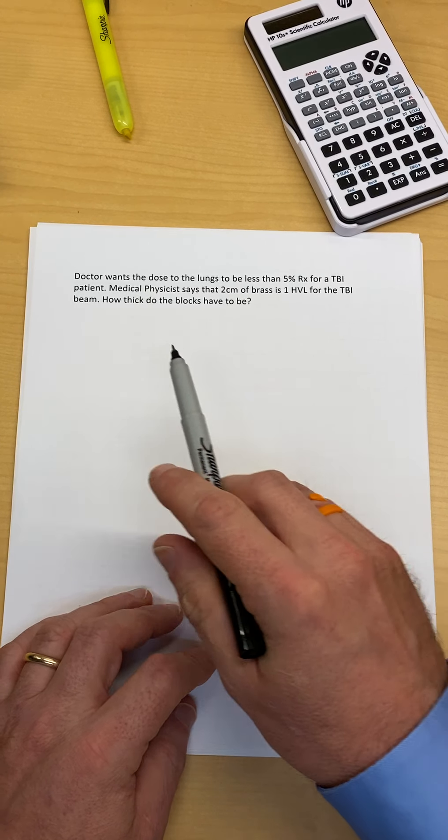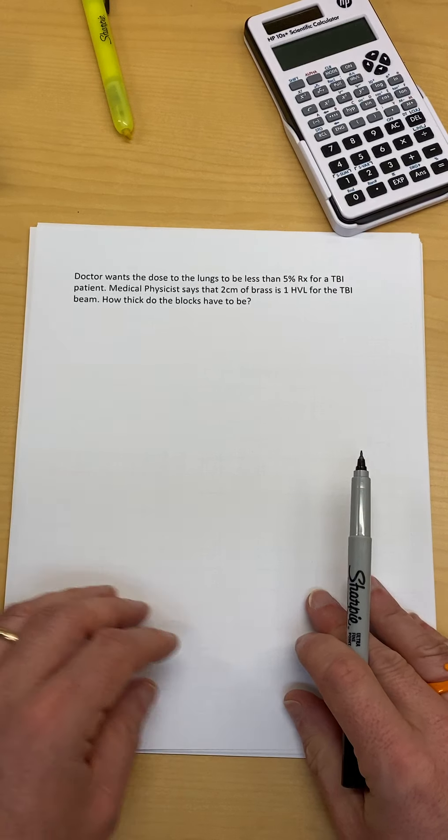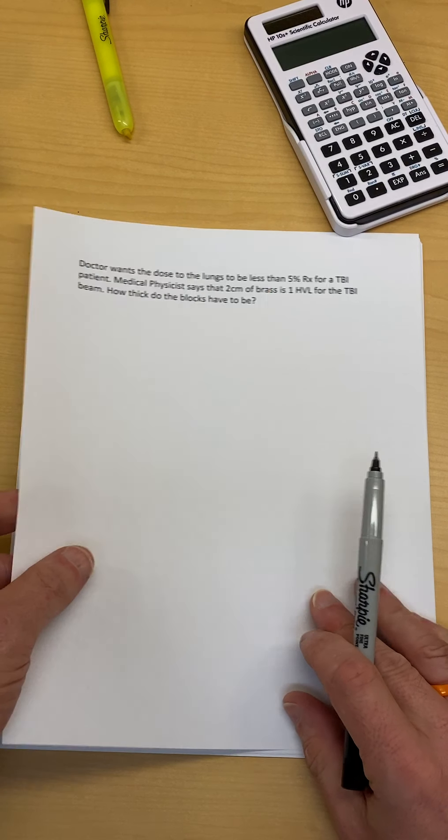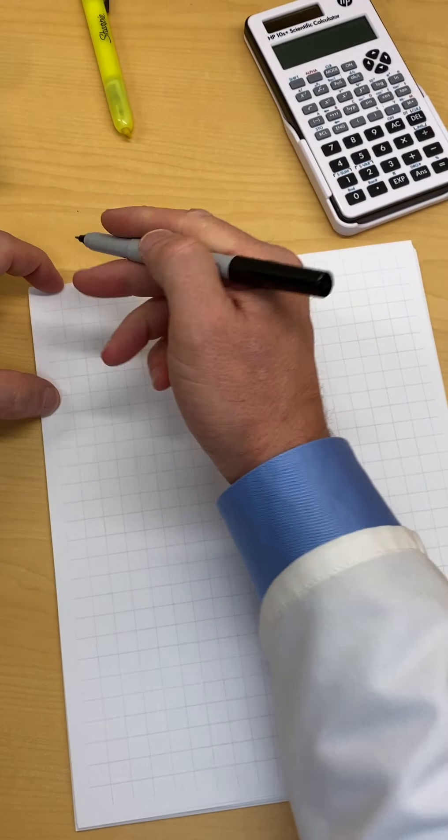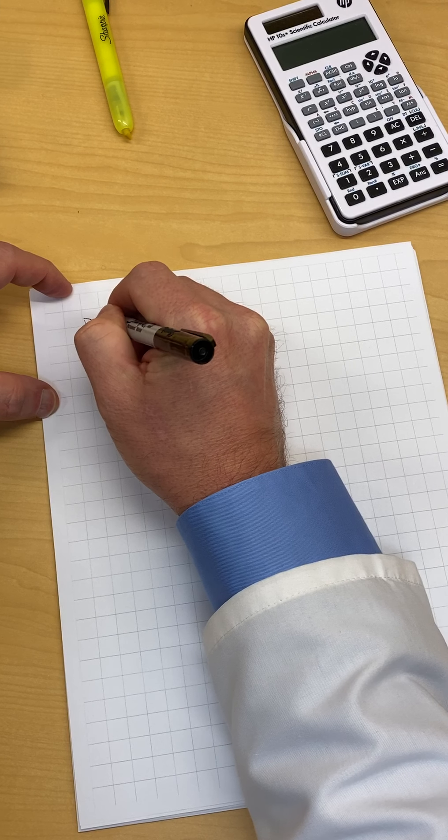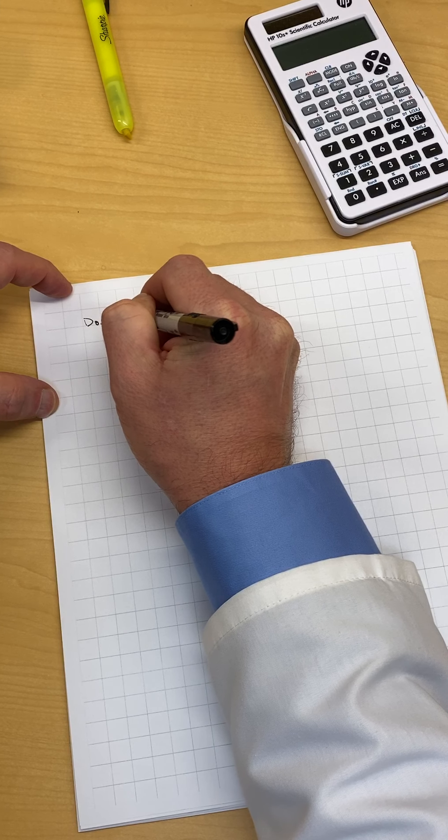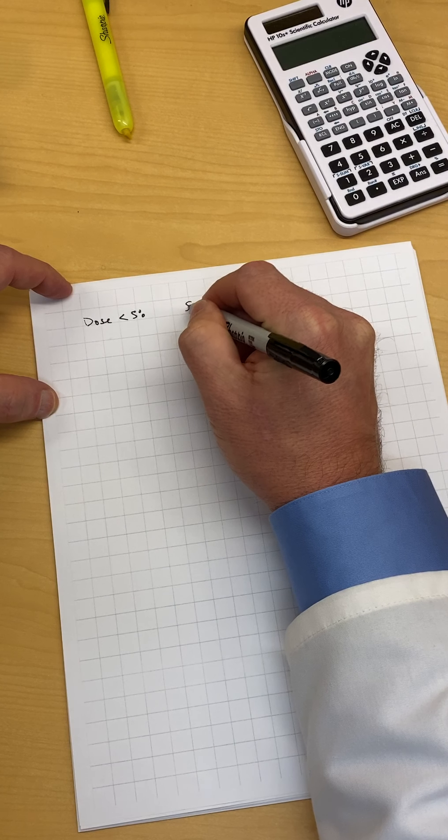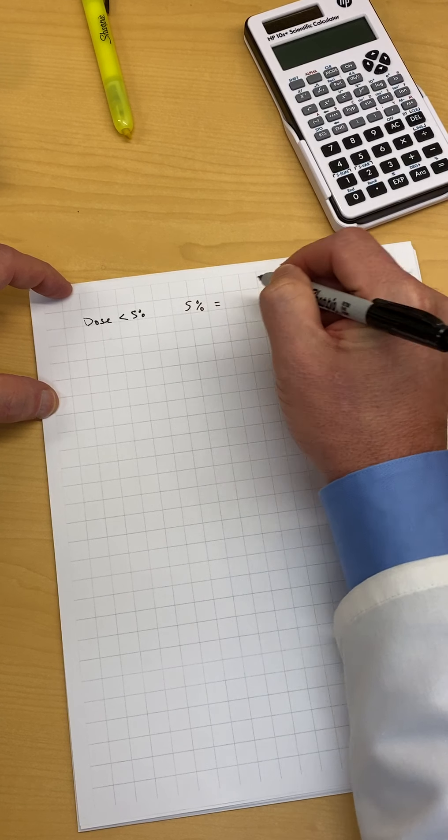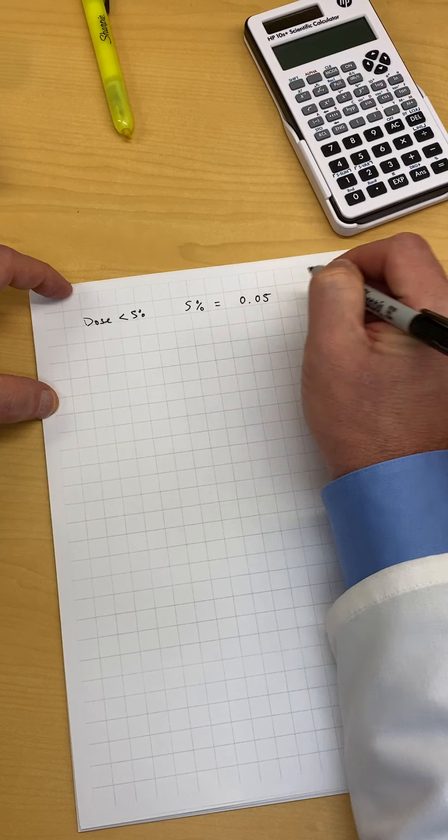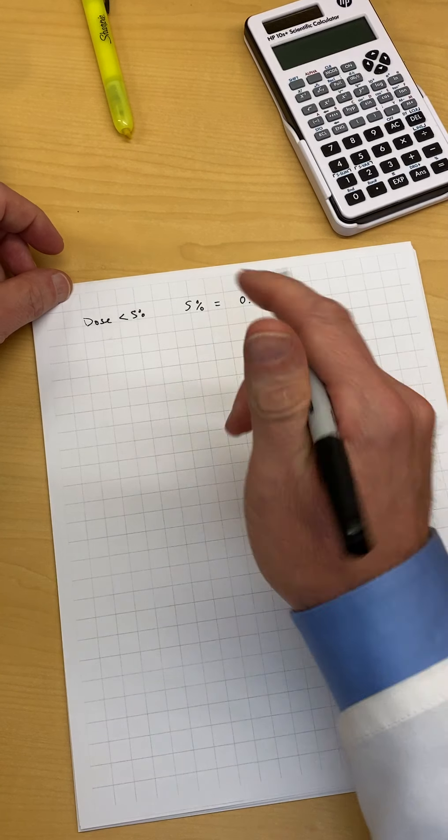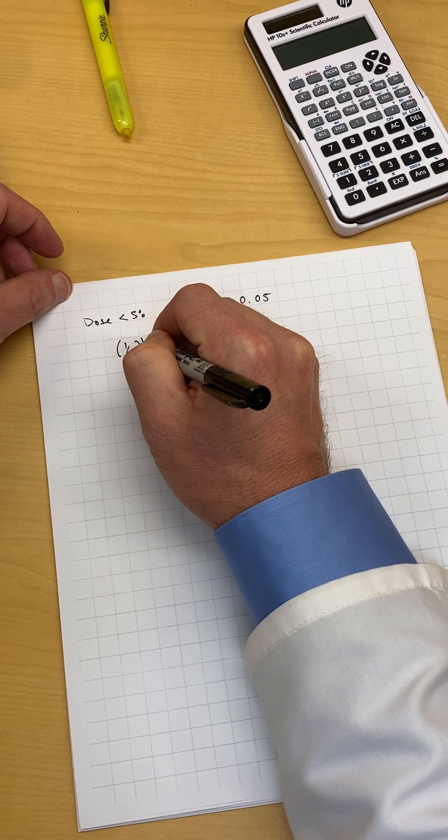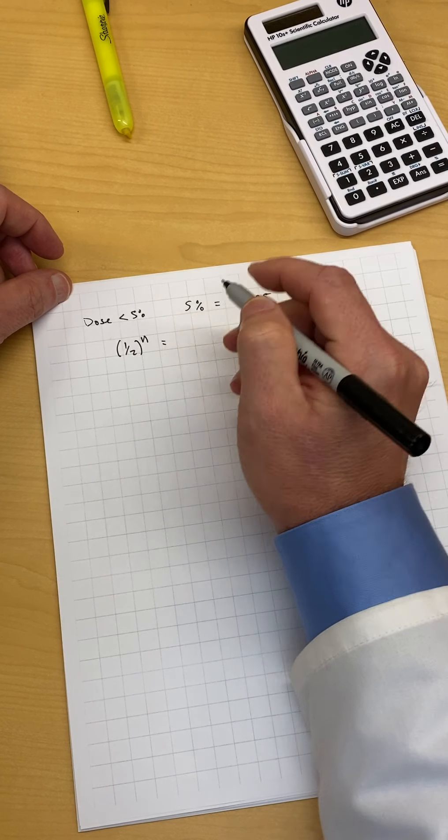How thick do the blocks have to be? We want the accumulation of dose to be less than five percent. Remember, five percent is the same thing as 0.05. When we do the half value layers, we want to get less than 0.05 and we're going to use this formula: one half to the n equals the attenuation.